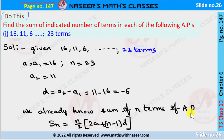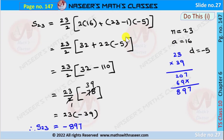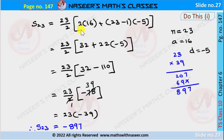We already know that the sum of n terms of an AP is given by the formula: Sₙ = n/2 × (2a + (n−1)d). Substituting n = 23, a = 16, and d = −5, we get S₂₃ = 23/2 × (2×16 + (23−1)×(−5)). Multiplying 2×16 gives 32, and 23−1 gives 22.